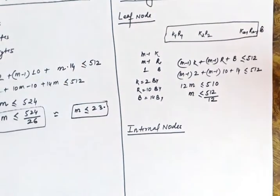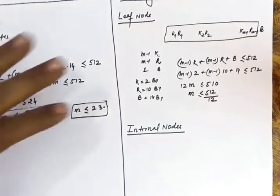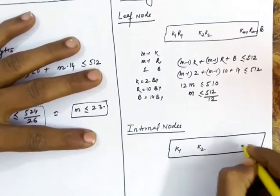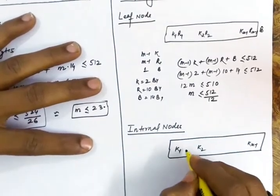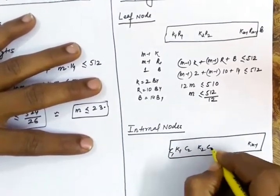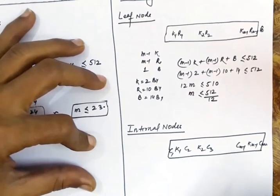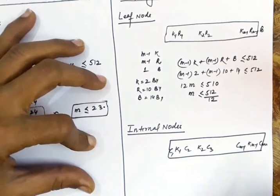Now, about the internal nodes. In the internal nodes, we do not store the record address, because internal nodes are just indexes — they are not data nodes. So in the internal node, the structure will be: it keeps the key values, and it keeps the addresses of the children. With m-1 keys, it will have m children, storing their block addresses. Internal nodes do not store record addresses.